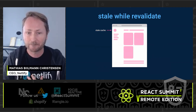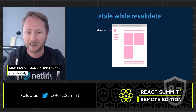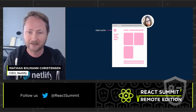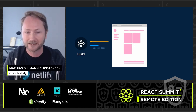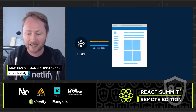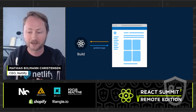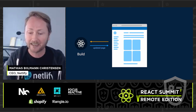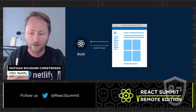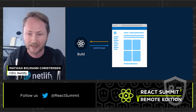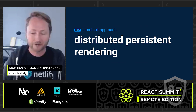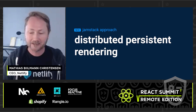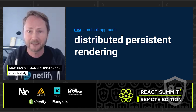Stale-while-revalidate has been another approach, but one I am personally skeptical about. It serves stale content to users and then in the background fetches a new version, regenerates, and puts that into the cache. The problem is that you no longer have a clear answer as a developer to what will happen when a user visits any given URL. At Netlify, we've been thinking a lot about how to approach these problems from a JAMstack architectural perspective and give developers the same easy-to-reason-about simplicity.